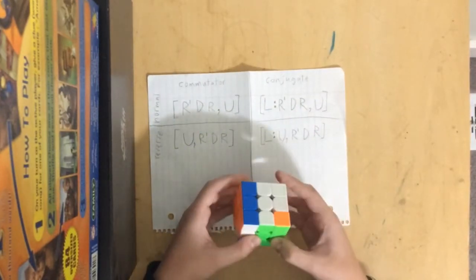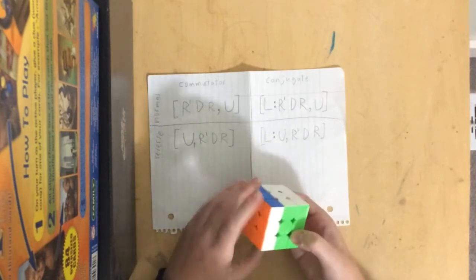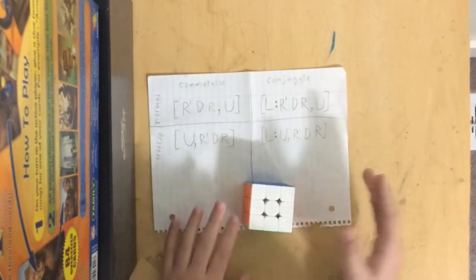So if I do L, and then U, R' D' R' D' R' L', and that's how conjugates work.